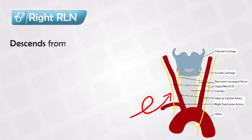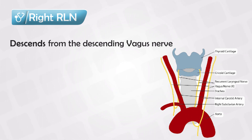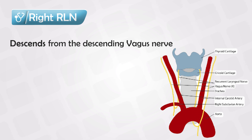The right recurrent laryngeal nerve originates from the descending vagus nerve, which is of course a cranial nerve, meaning it doesn't originate from the spine but rather from the brain itself.